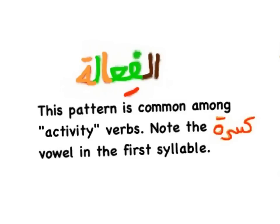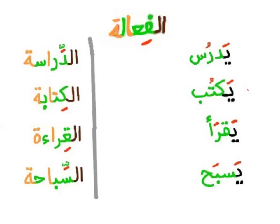Another pattern is Al-Fa'ila. This pattern is common among activity verbs — note the Kasra vowel in the first syllable. Examples: يدرس (he studies) → الدراسة (studying/to study); يكتب (he writes) → الكتابة (to write/writing); يقرأ (he reads) → القراءة (reading/to read); يسبح (he swims) → السباحة (to swim/swimming).